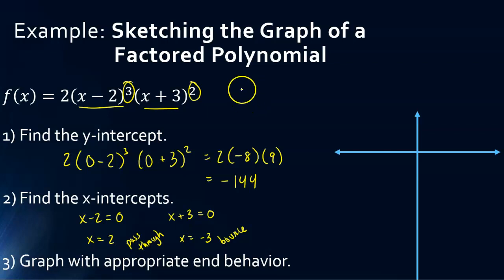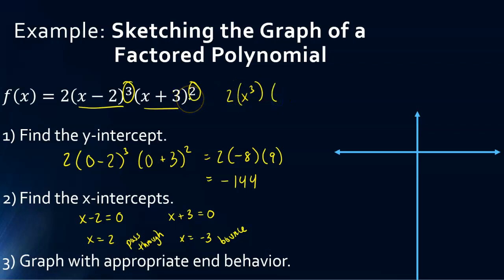Now let's figure out our end behavior. We take x cubed from the (x minus 2) cubed term, and the 2 out front, and then x squared from (x plus 3) squared. Multiplying those together, we add the exponents and get a leading term of 2x to the fifth. Since it's positive, the right side goes up. Since it's an odd exponent, the left side goes in the opposite direction — left side goes down.